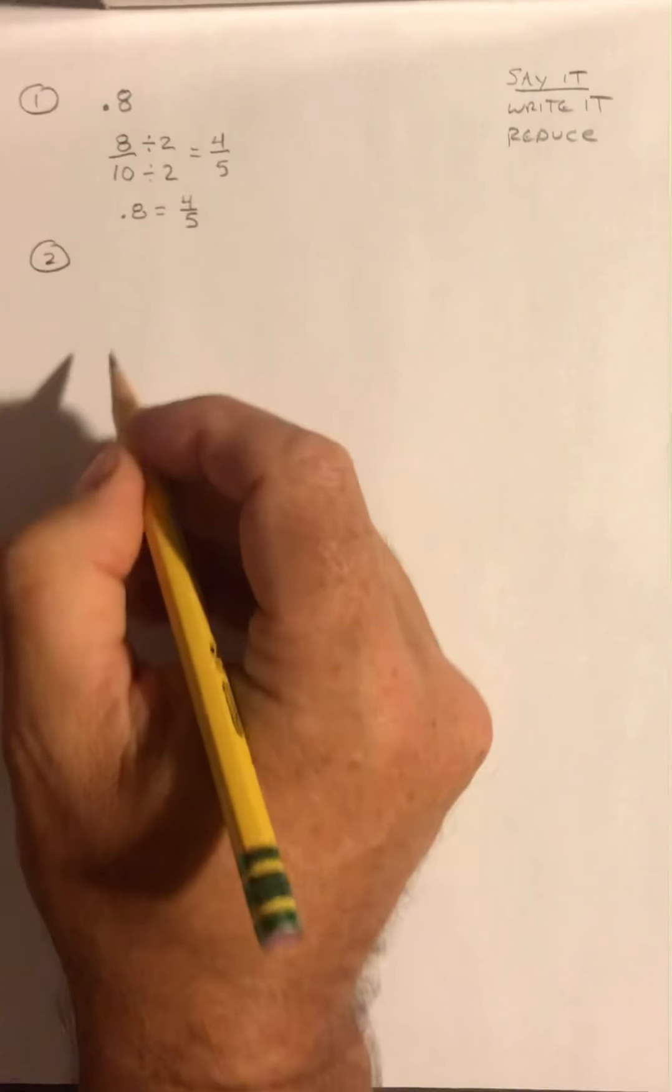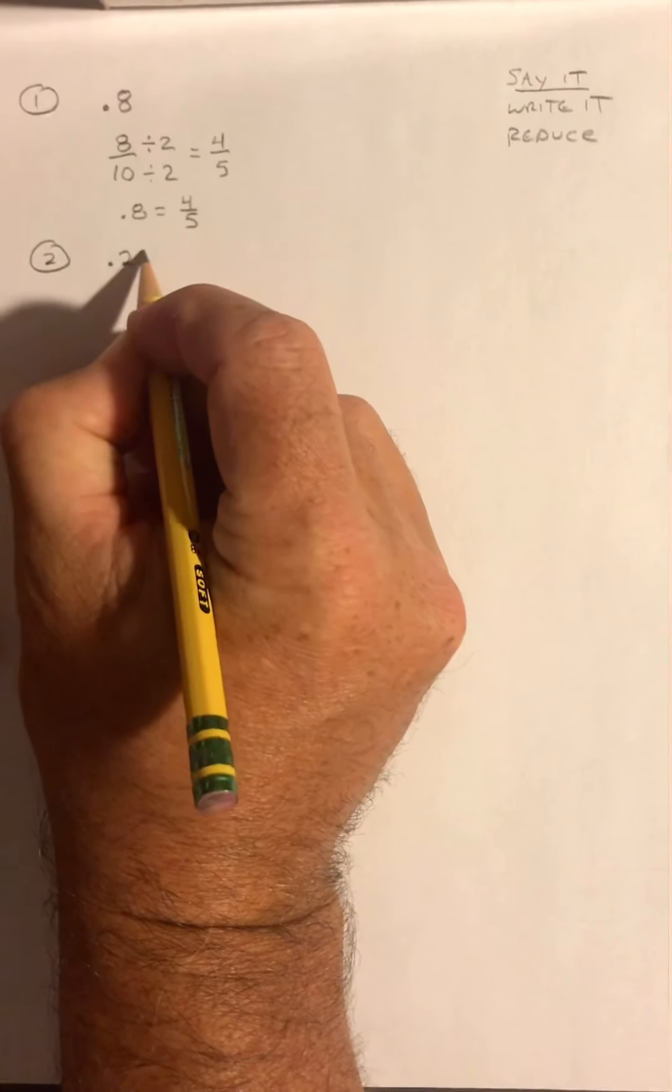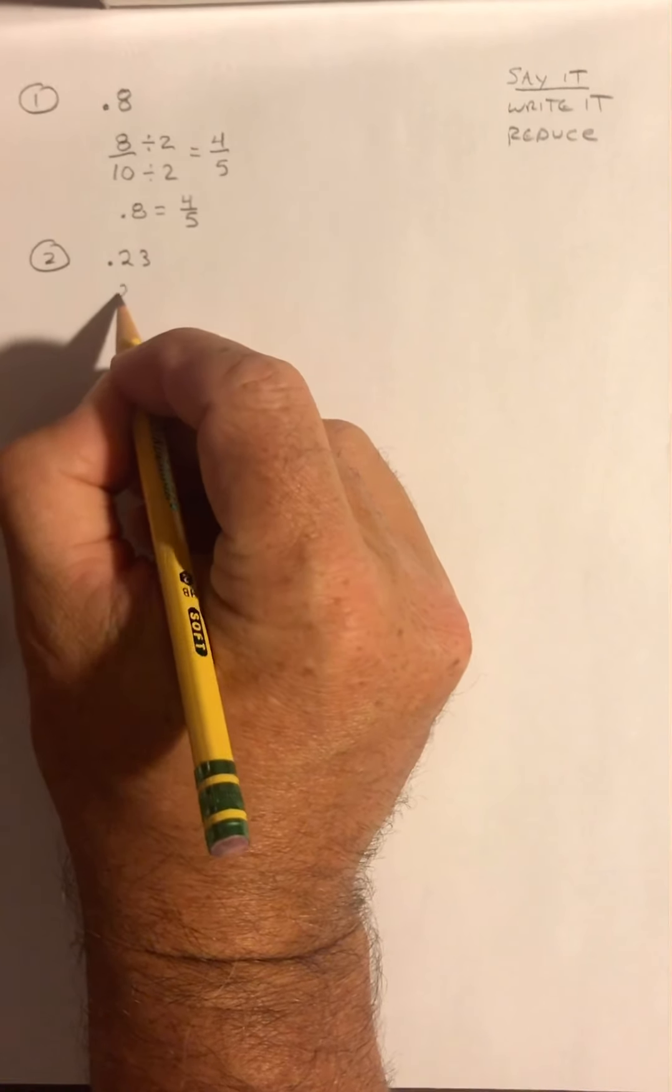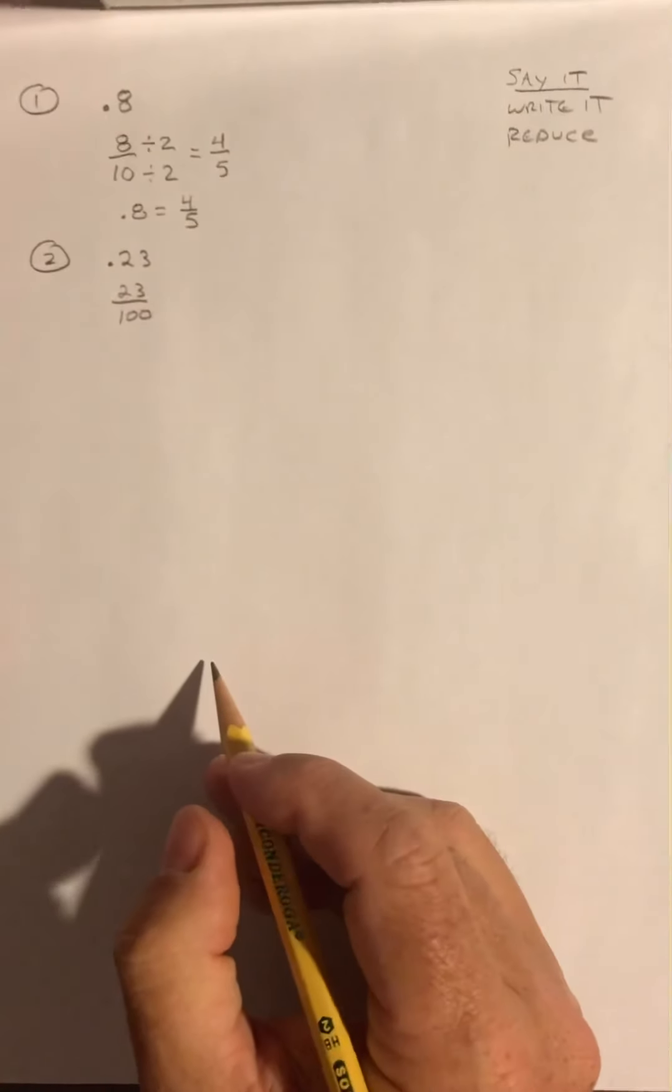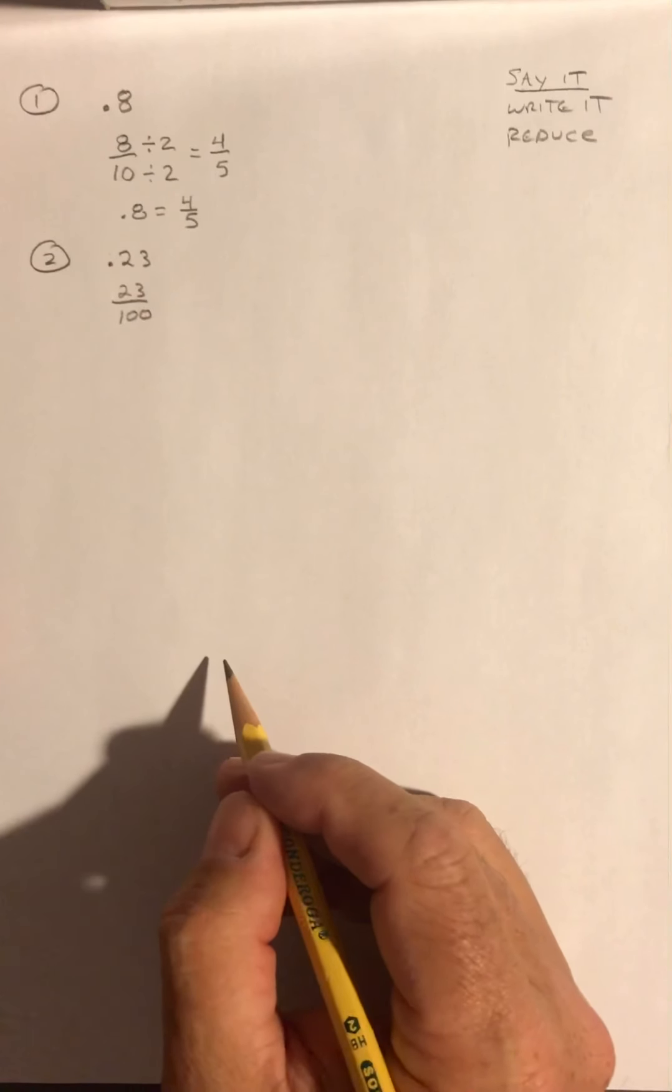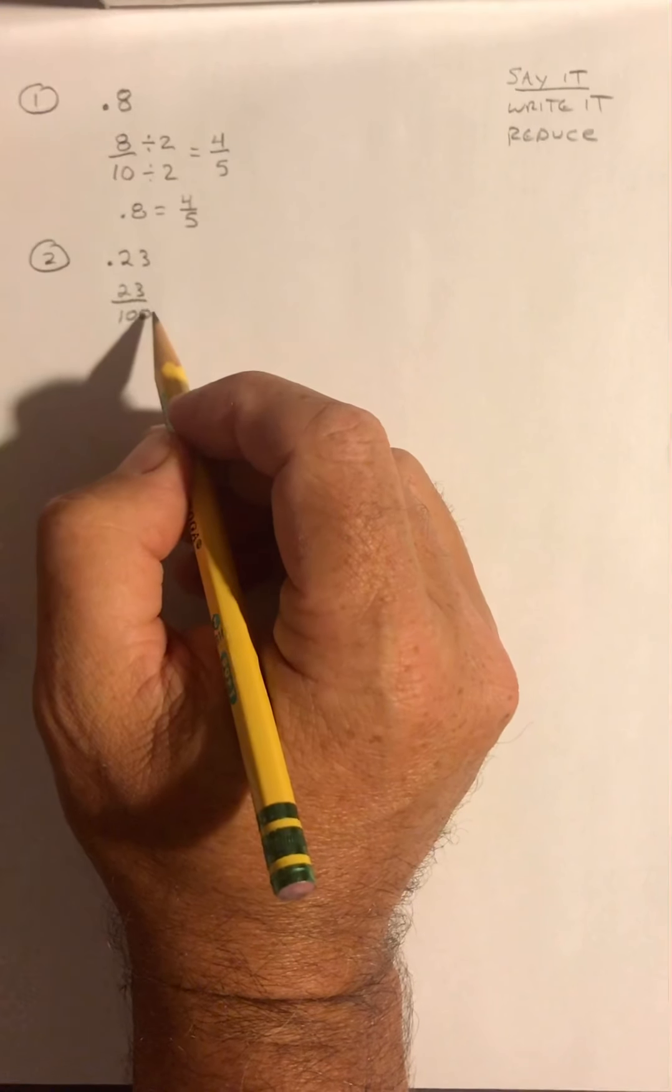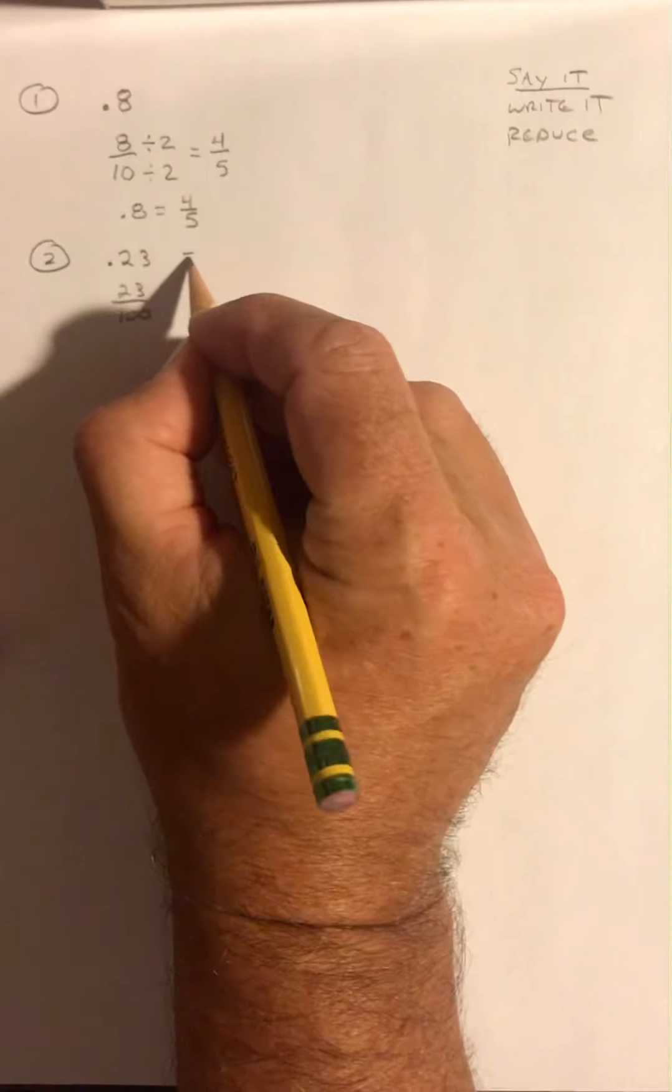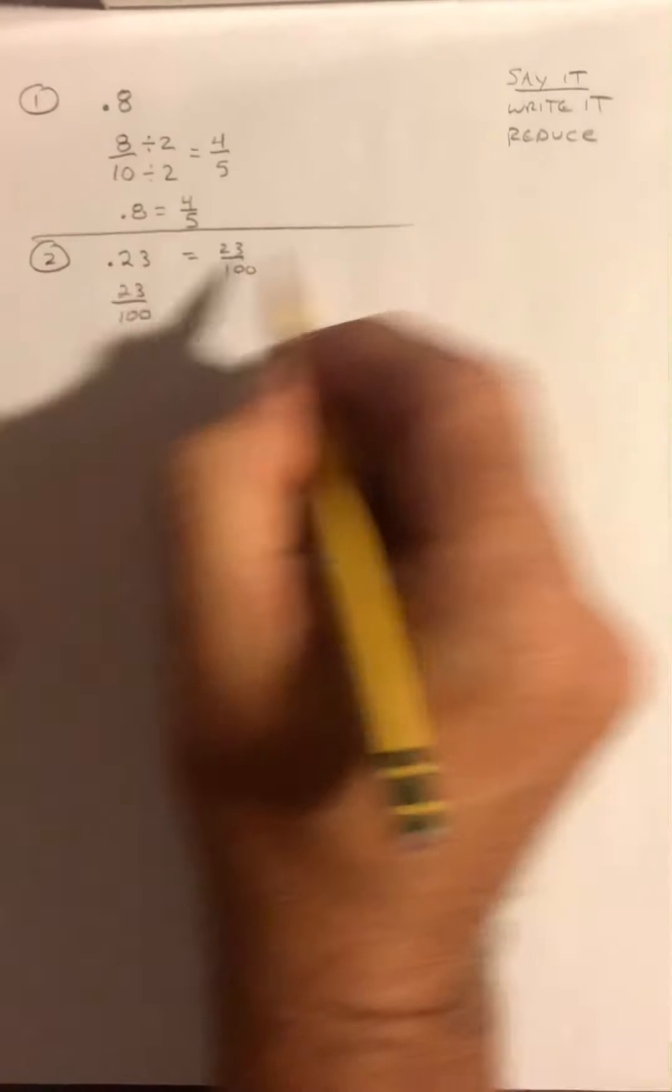Example number two. I'm going to do 0.23. Let's say that correctly. That is 23 hundredths, and I'm going to write it as a fraction as 23 hundredths. Then I'm going to reduce it. In this particular case, I can't reduce it. The reason I can't reduce it is because 23 and 100 do not have any common factors. So 0.23 equals 23 hundredths, and I'm done.